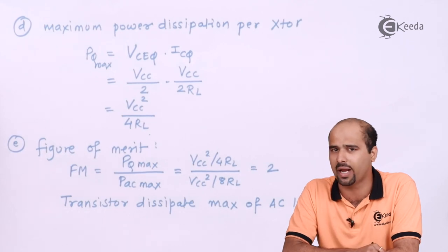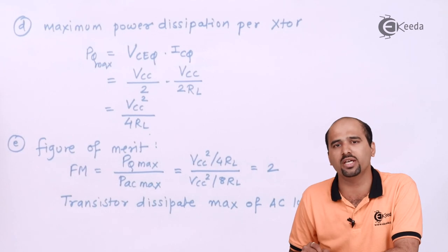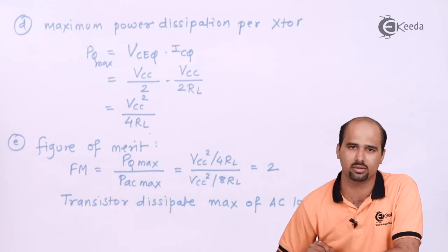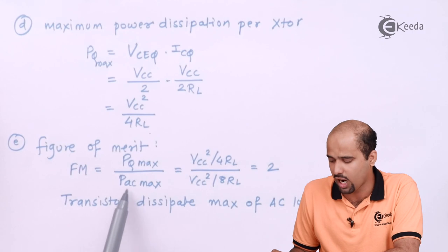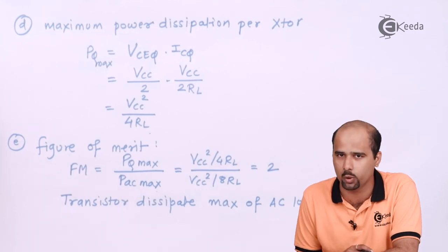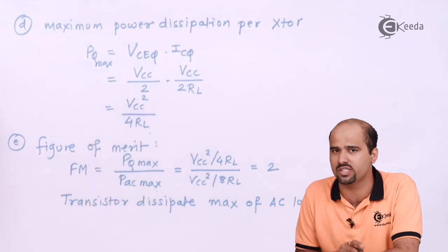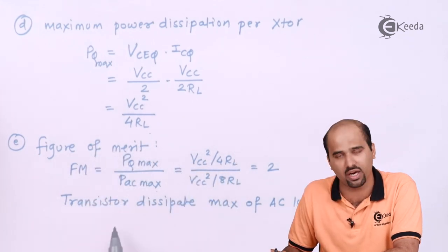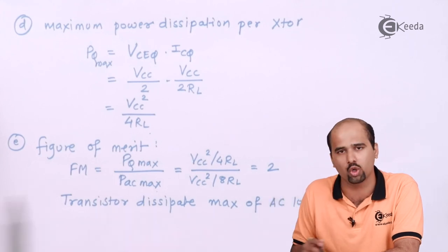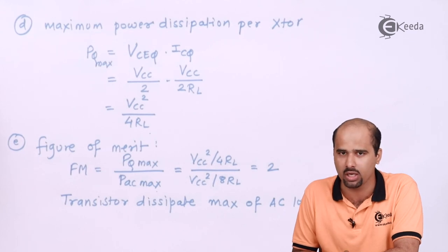Let's calculate the figure of merit, which is the ratio of power dissipated by one transistor divided by the output AC power. All values are in terms of VCC and RL, and calculating this ratio gives a figure of merit equal to 2 in ideal conditions with maximum swing.